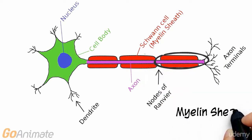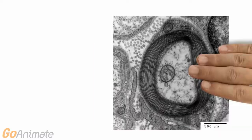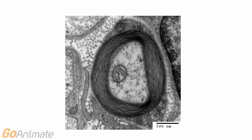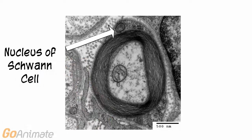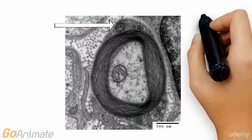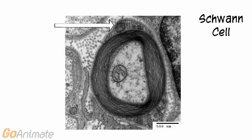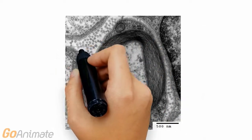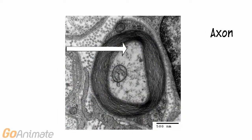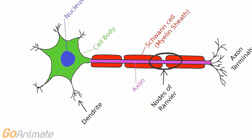Let's take a closer look at the myelin sheath. Here is an electron microscope picture of an actual myelinated axon. We can see the nucleus of the Schwann cell, the cell itself, and the axon on the inside. Notice how myelin wraps around the axon. The gaps in the myelin sheath are called nodes of Ranvier, and they play an important role in saltatory conduction.